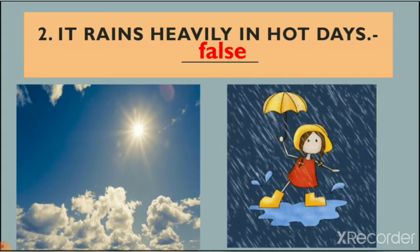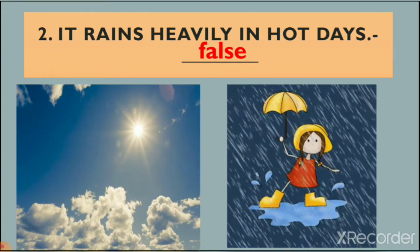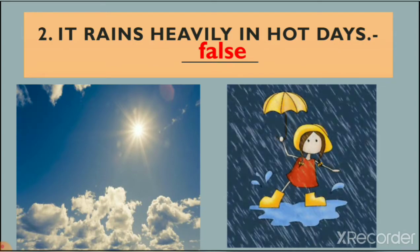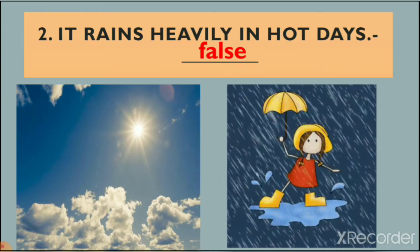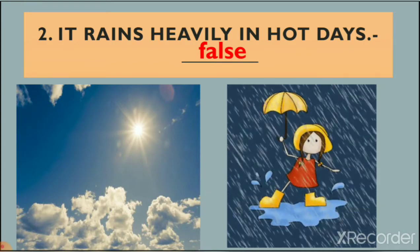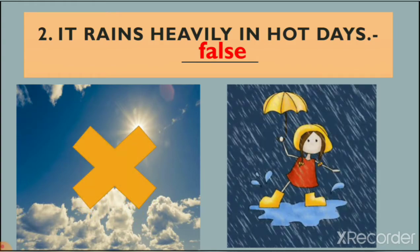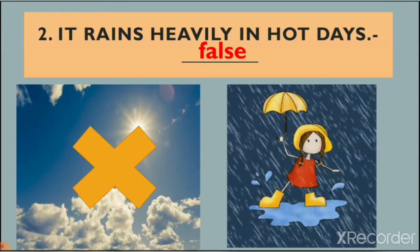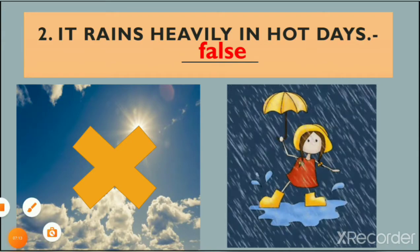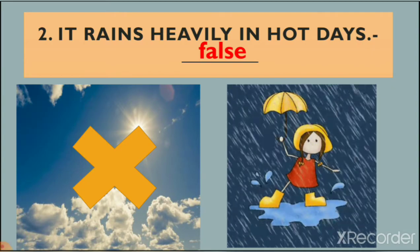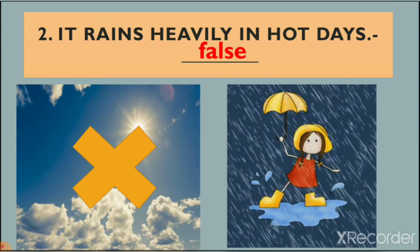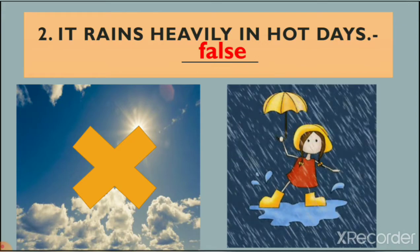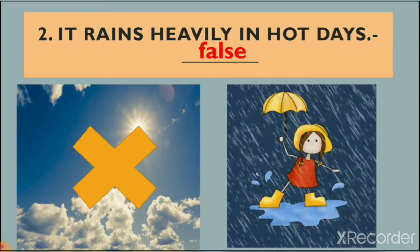To summarize the difference: on sunny days the sun shines brightly; on rainy days it rains heavily; on cold days there are cold waves; and on windy days wind blows very fast. It rains heavily in hot days is a wrong statement, so we write false. Rains heavily in rainy days, not in hot days.